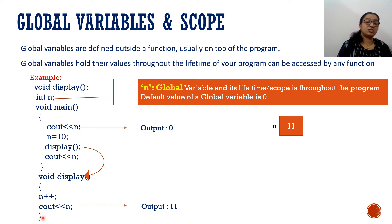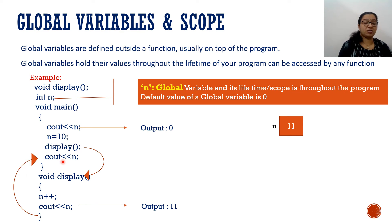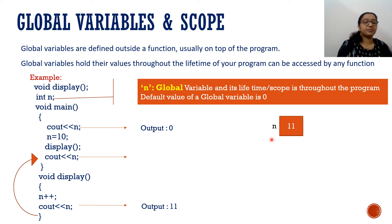The display function ends, so execution moves back to main. The next statement is cout n again in main. Since there is only one global n and its value was changed to 11 by the display function, this cout n also outputs 11. This demonstrates that any function can access and modify the same global variable.